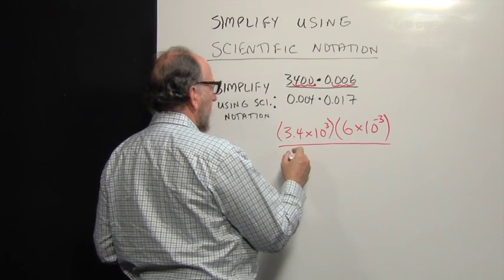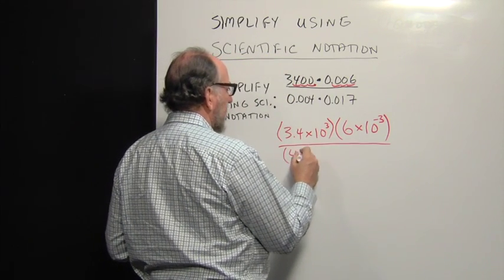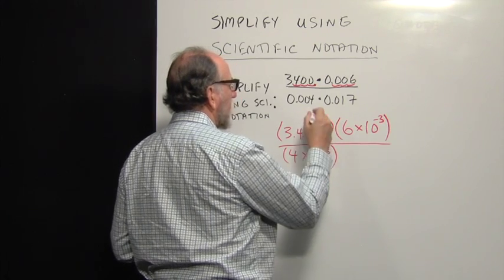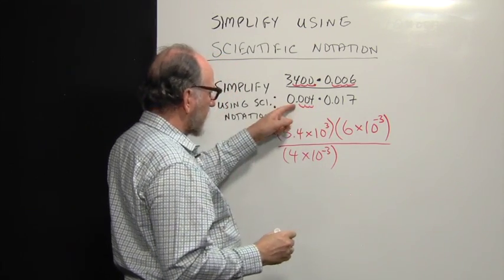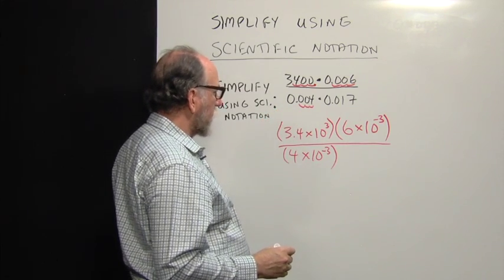And I do the same with the bottom. So that's going to be 4 times 10 to the negative 3 as well, moving that decimal point three places to the right.